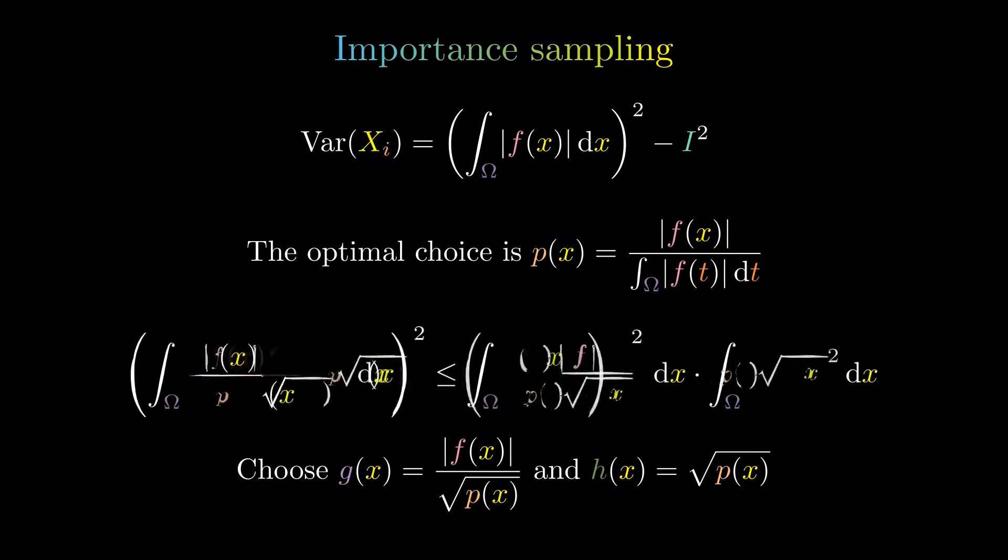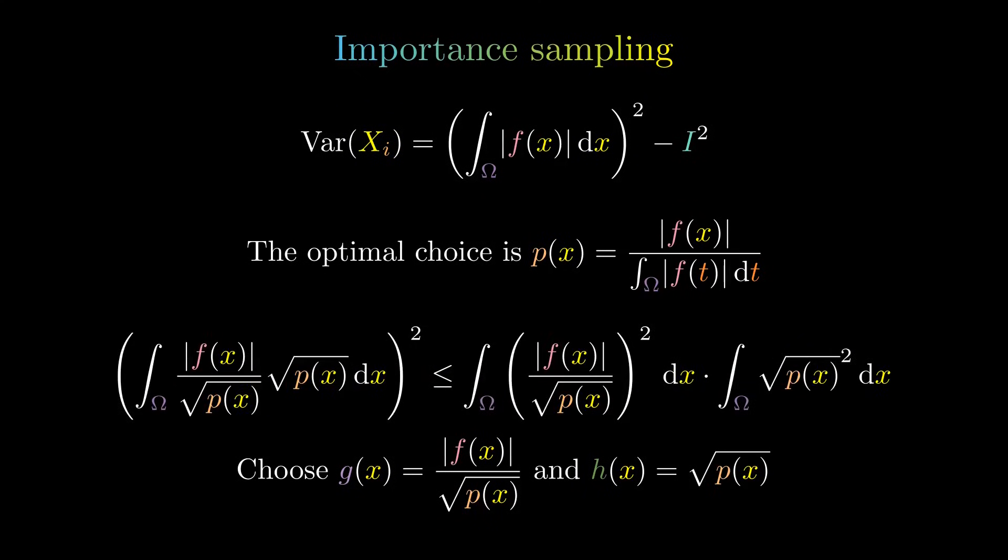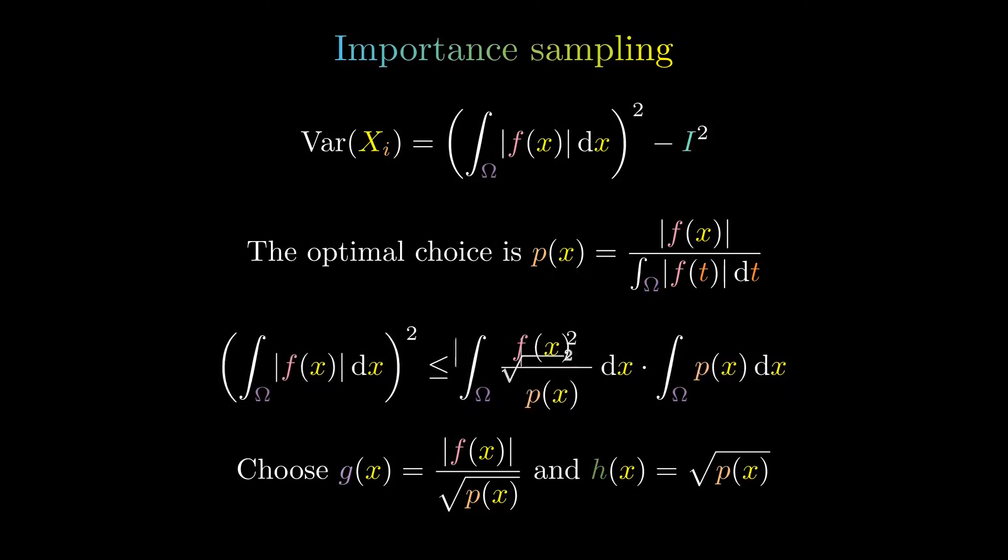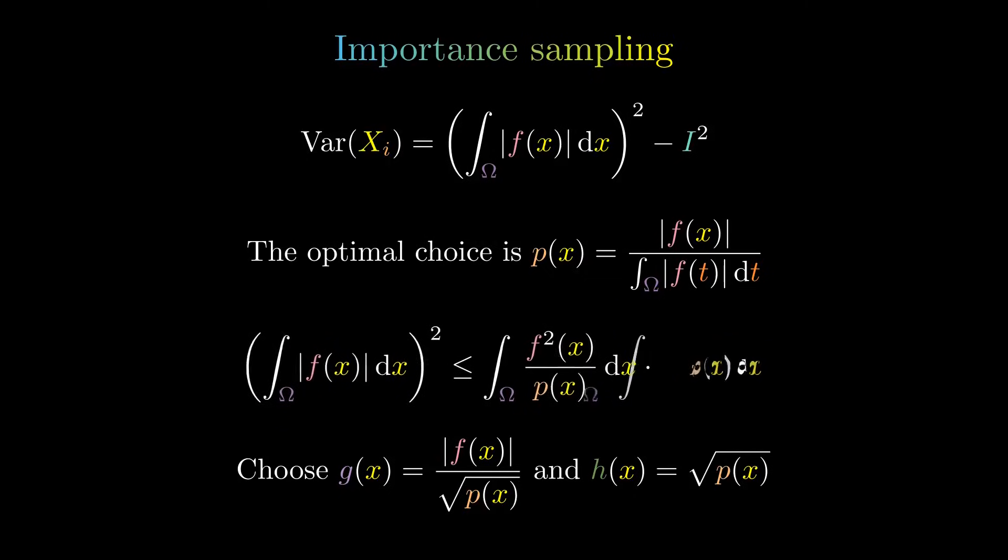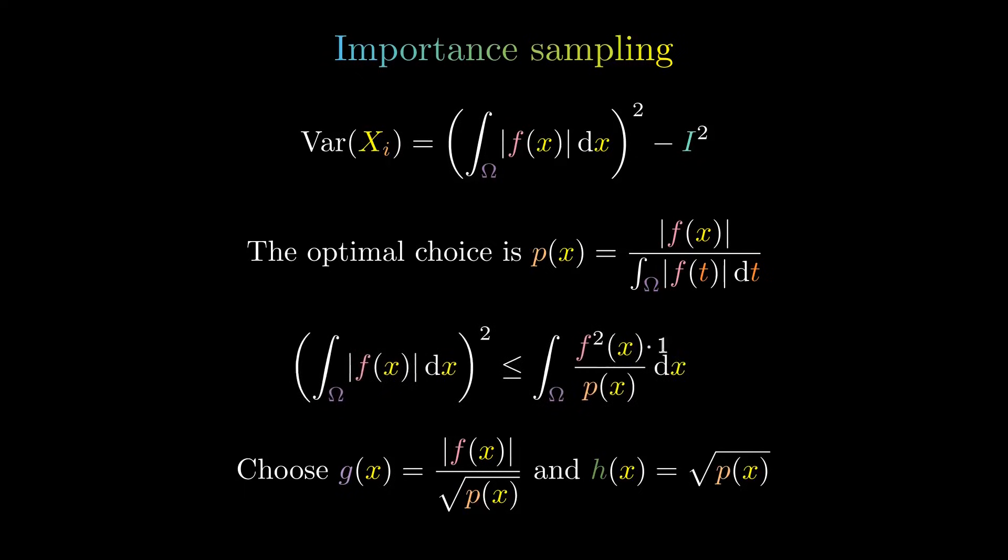Then, we simplify algebraically. Since P is a density function, the integral over its support is 1. Finally, subtract I squared from both sides to derive the inequality that proves our initial choice was optimal, with the left-hand term representing the variance from our choice and the right-hand one the general variance.